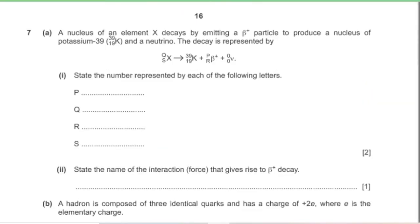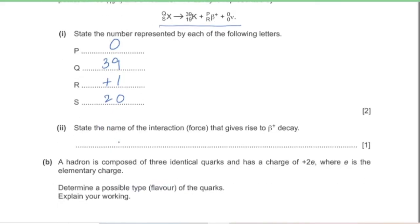Question 7, part A: nucleus X decays by emitting a beta-plus particle to produce potassium-39 and a neutrino. Part 1: determine values p, q, r, s. Beta-plus has mass number 0, so p = 0. q = 39 + 0 + 0 = 39. r = +1 (charge of beta-plus). s = 19 + 1 + 0 = 20.